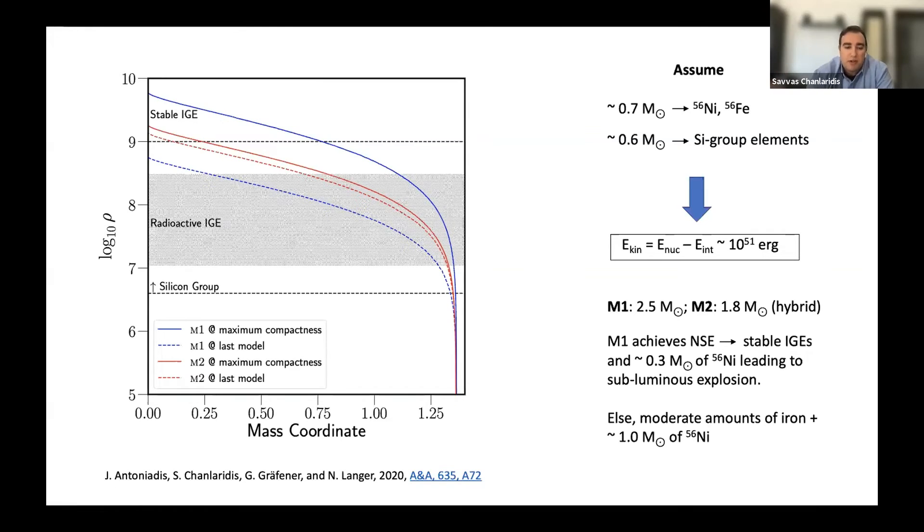But as you probably know, supernova Ia come in different flavors in terms of the spectra and light curves, so it would be nice to know if this progenitor channel can give a distinct nucleosynthetic signature in order to allow us to distinguish it from the other progenitor channels. And this plot here shows the density profiles for two of our models at two different evolutionary stages. The solid lines represent the density profile when the core has reached its maximum density, and the dashed lines represent the density profile at the end of simulations.